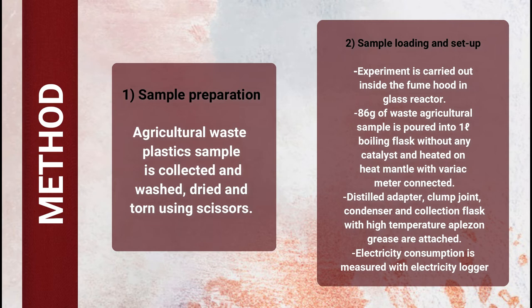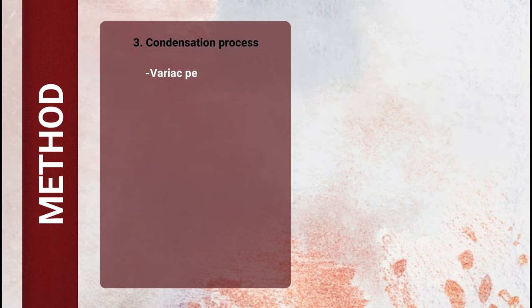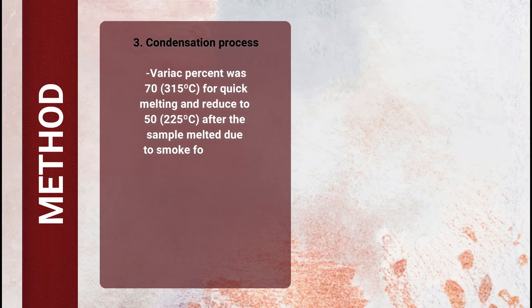The electricity consumption will be measured using an electricity logger. For the condensation process, the variac was set to 70%, which is 315 degrees Celsius, for quick melting, and will be reduced to 50%, which is 225 degrees Celsius, after the sample melts.